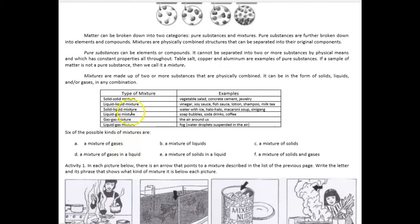Next, you can see here that there are different types of mixture. We have the solid-solid mixture: vegetable salad, concrete, cement, jewelry. We have the liquid-liquid mixture: vinegar, soy sauce, fish sauce, lotion, shampoo, milk tea. We have the solid-liquid mixture: water with ice, halo-halo, macaroni soup, sinigang.